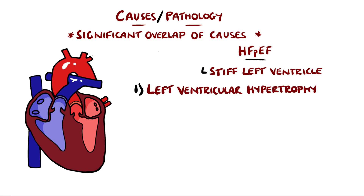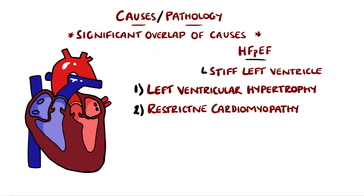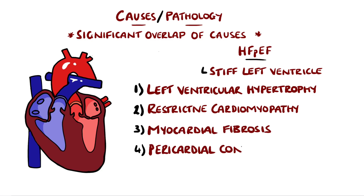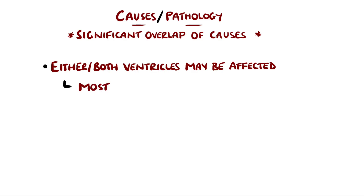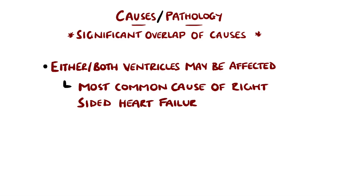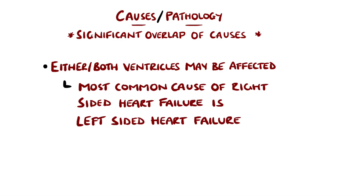Because the ventricle is thicker, it doesn't stretch as easily and therefore won't fill as well during diastole, giving a diastolic heart failure. The same goes for other conditions that prevent the left ventricle from stretching as easily, including restrictive cardiomyopathy, myocardial fibrosis, and pericardial constriction. Either ventricle can be affected, giving left or right-sided heart failure. However, in most cases, if one ventricle is affected it will have an effect on the other. The most common cause of right-sided heart failure is left-sided heart failure.